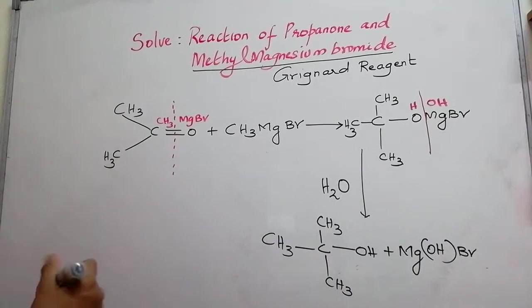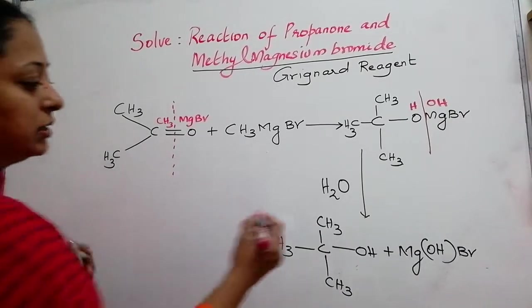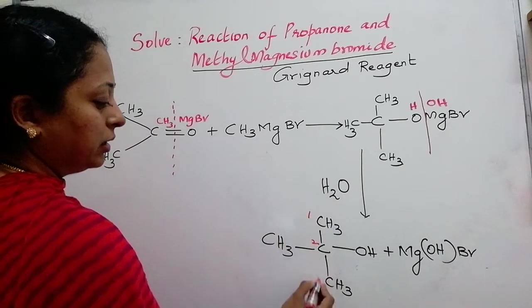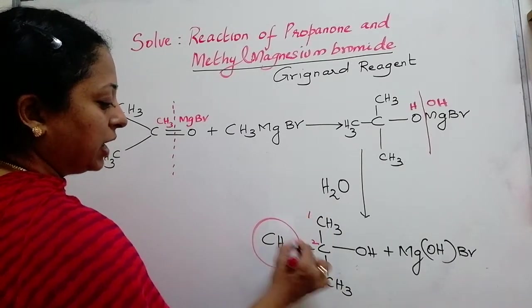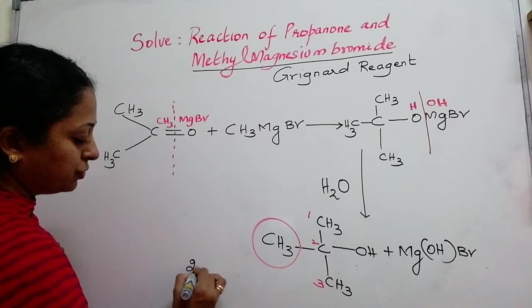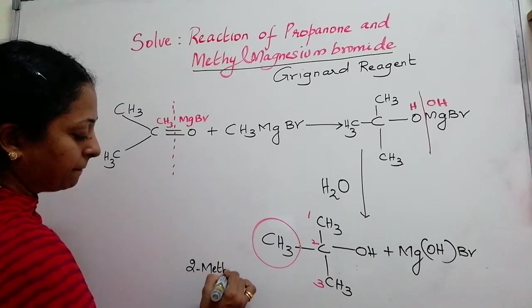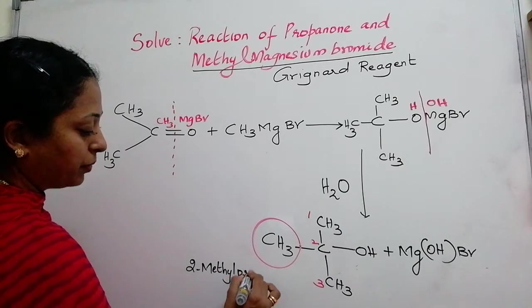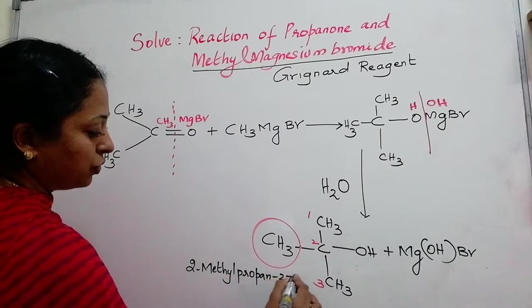And the name of the compound will be, you know how to number it? That is longest carbon chain with a side chain here, methyl. So, it will be called as 2-methyl propan-2-ol.